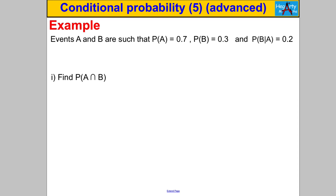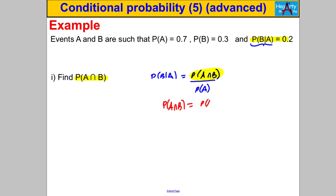Question 5: find P(A∩B) given P(B|A) and P(A). Using the formula P(B|A) = P(A∩B) / P(A), rearranged: P(A∩B) = P(A) × P(B|A). So we do 0.7 × 0.2 = 0.14.